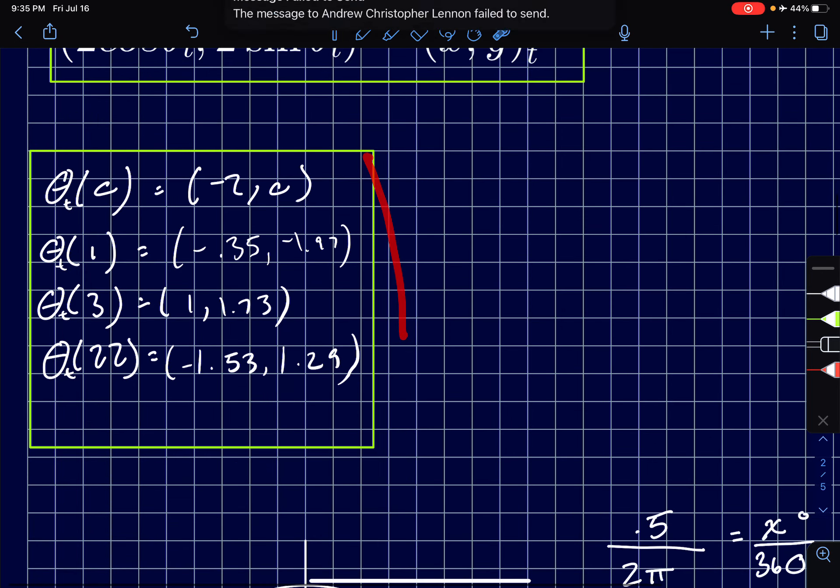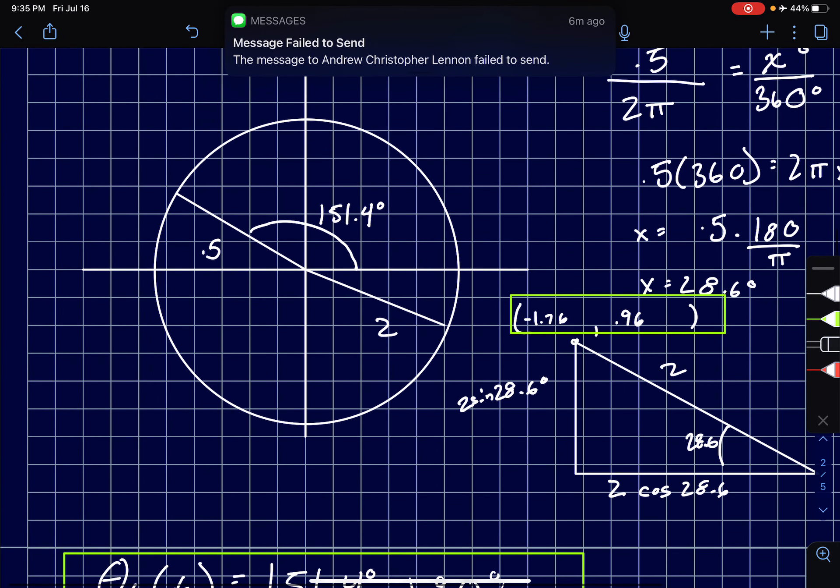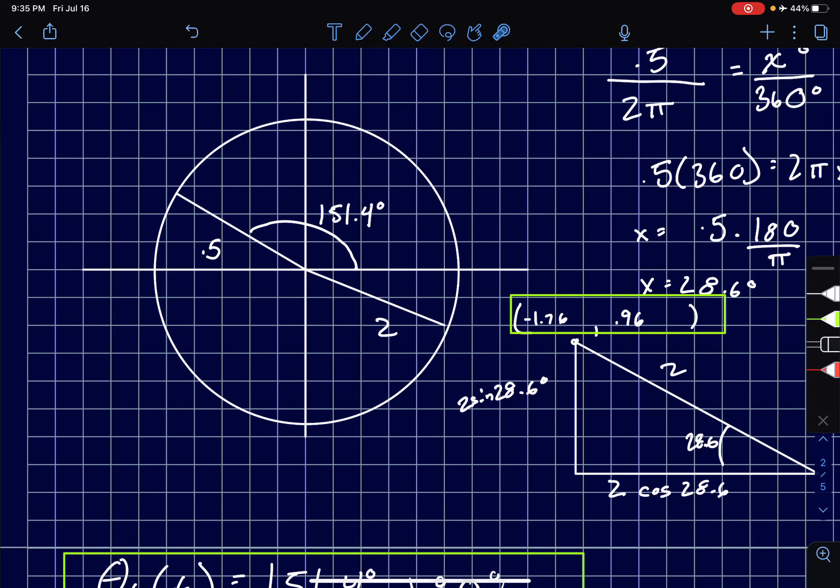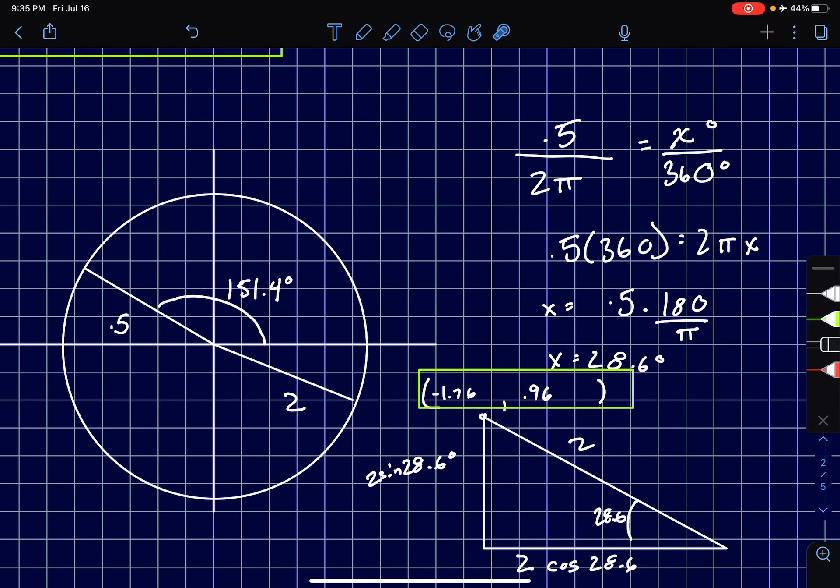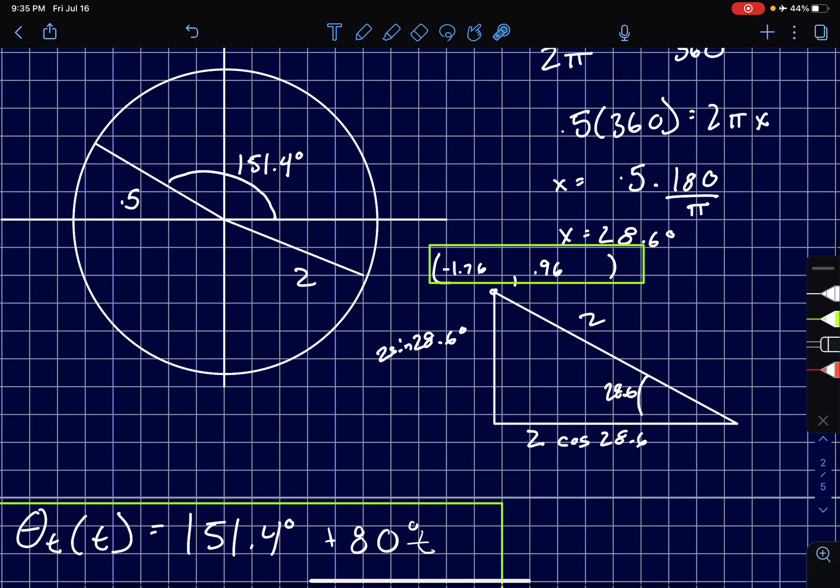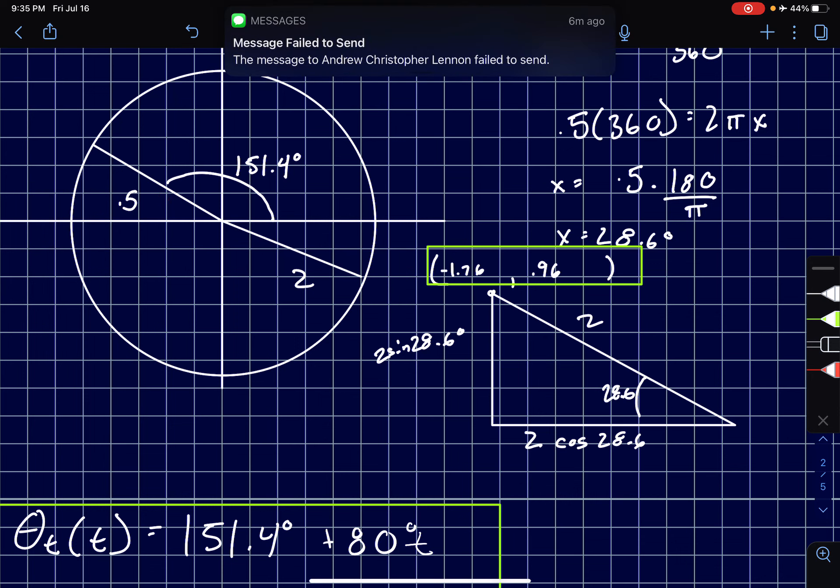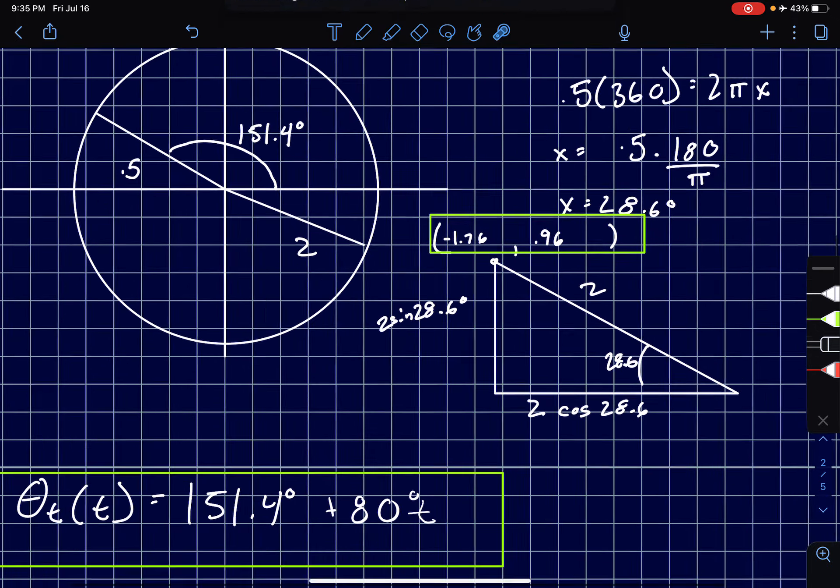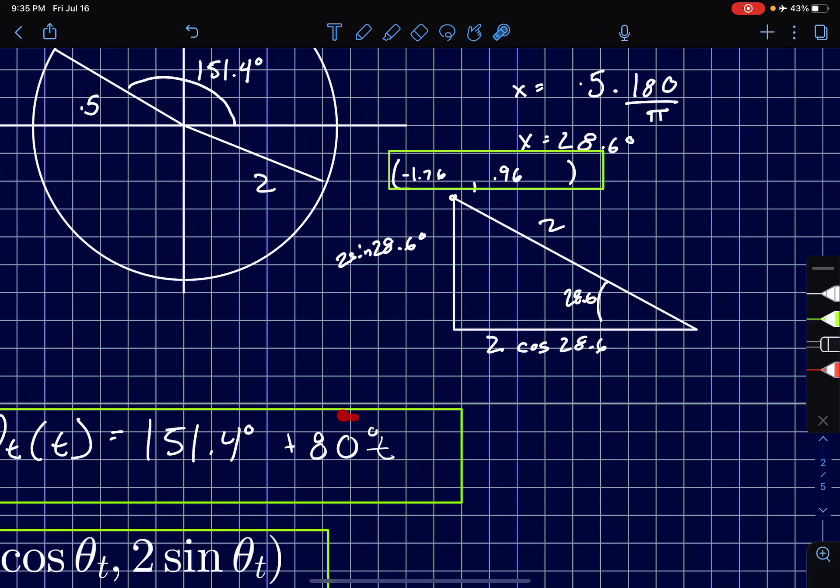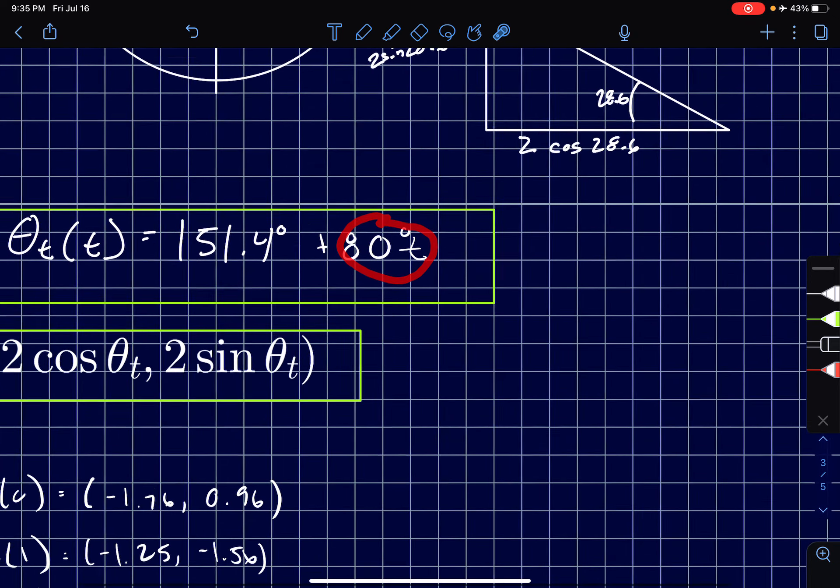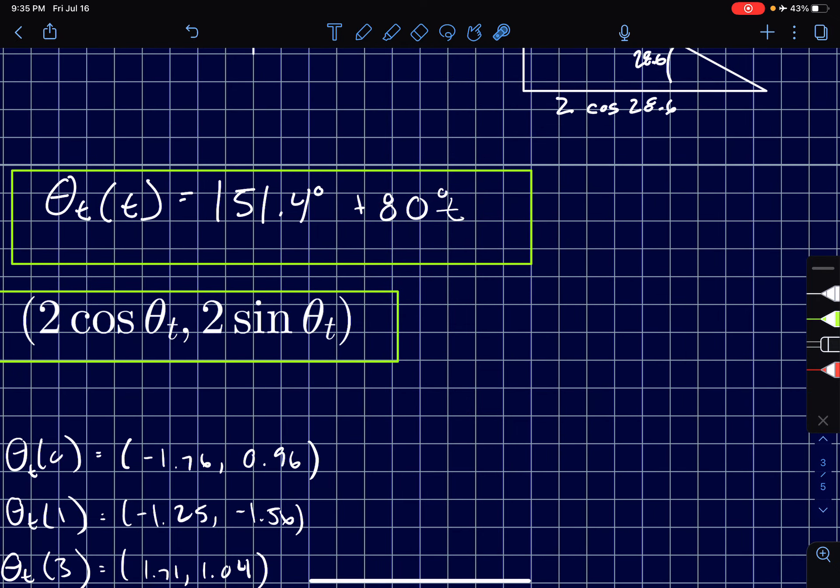For part c or diagram c we know that the starting position is 0.5 radians from the y-axis. So what I did was figure how many degrees this was by using a conversion. I did 0.5 over 2π equals x degrees over 360 degrees, solve for x, and I knew that this angle is 28.6 degrees. I did 180 minus 28.6 and was able to figure out that this angle was 151.4 degrees. Then I converted 4π over 9 into degrees and I got the angular speed of 80 degrees per second and used the same formula just now in degrees and with 151.4 as the starting position.